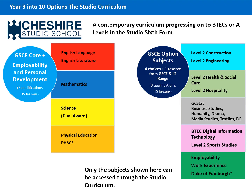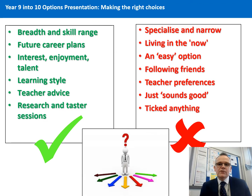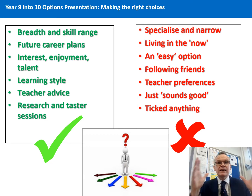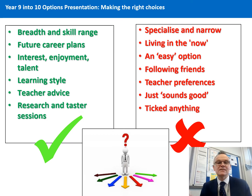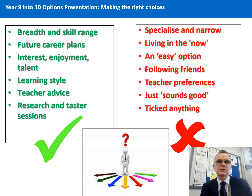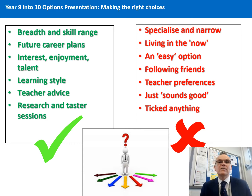It is worth highlighting that the courses of construction, engineering, health and social care, hospitality, and the work experience package are exclusive offers within Cheshire Studio School and cannot be accessed from the academy curriculum route. This slide is about how to make informed and sensible decisions about subject choices moving from Year 9 into Year 10. As you can see on the left hand side, all of those criteria or reasons for choices are really valid. My advice would be to maintain breadth and range of subjects rather than over-specialising at this point in time.